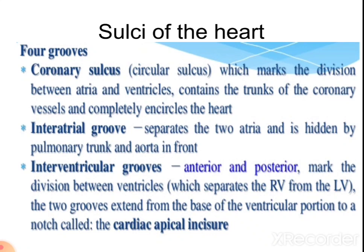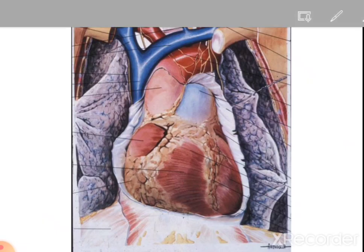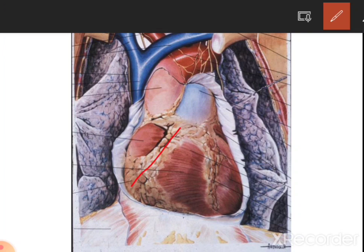The heart has four sulci. The coronary sulcus marks the division between the two atria and the ventricles; it contains the trunks of coronary vessels and completely encircles the heart. The interatrial groove separates the two atria and is hidden by the pulmonary trunk and aorta in front. The interventricular groove lies between the two ventricles, with grooves on both anterior and posterior sides marking the division between the right and left ventricle. Here we can see the coronary sulcus encircling between atria and ventricles, and the interventricular groove on the anterior side.